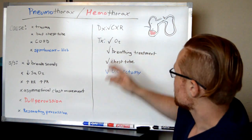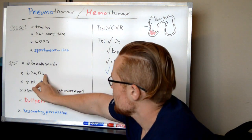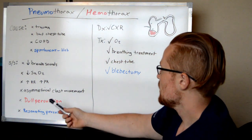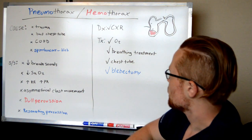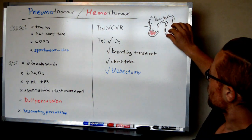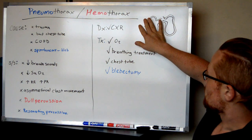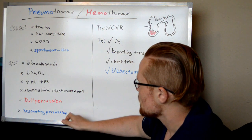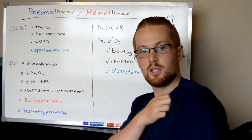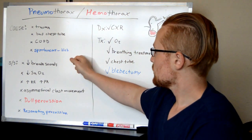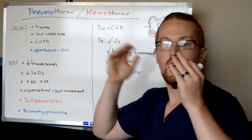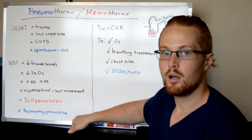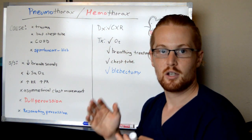Oxygen saturations are going to drop because the patient isn't able to fully use the lung. Heart rate and respiratory rate are going to increase to compensate. You may also see asymmetrical chest movement — one side might be expanding normally, but the affected side may not expand as much. One way to tell the difference between pneumo and hemo is percussion: if there's air, you'll hear an echo, whereas if it's blood, it will sound very dull because it's a liquid.